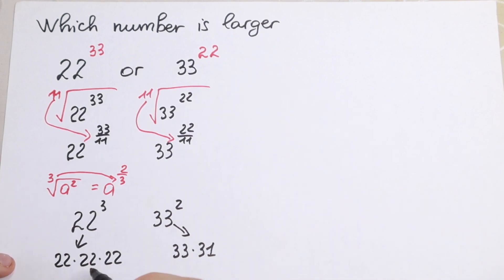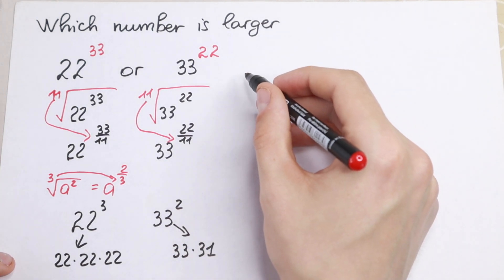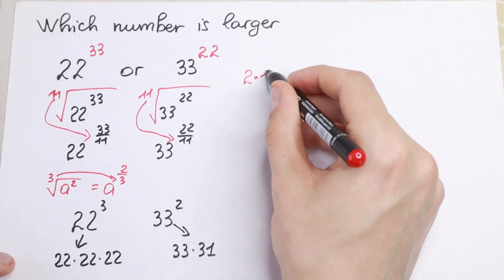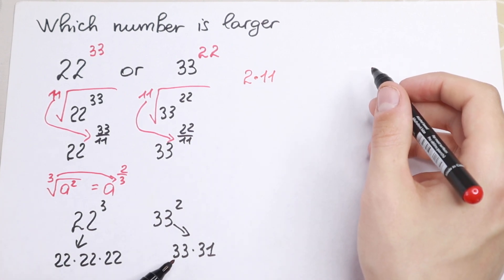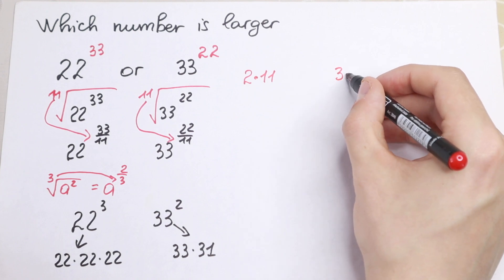One of these 22s is really good to write as 2 times 11. And right here 33 is really good to write as 3 times 11.